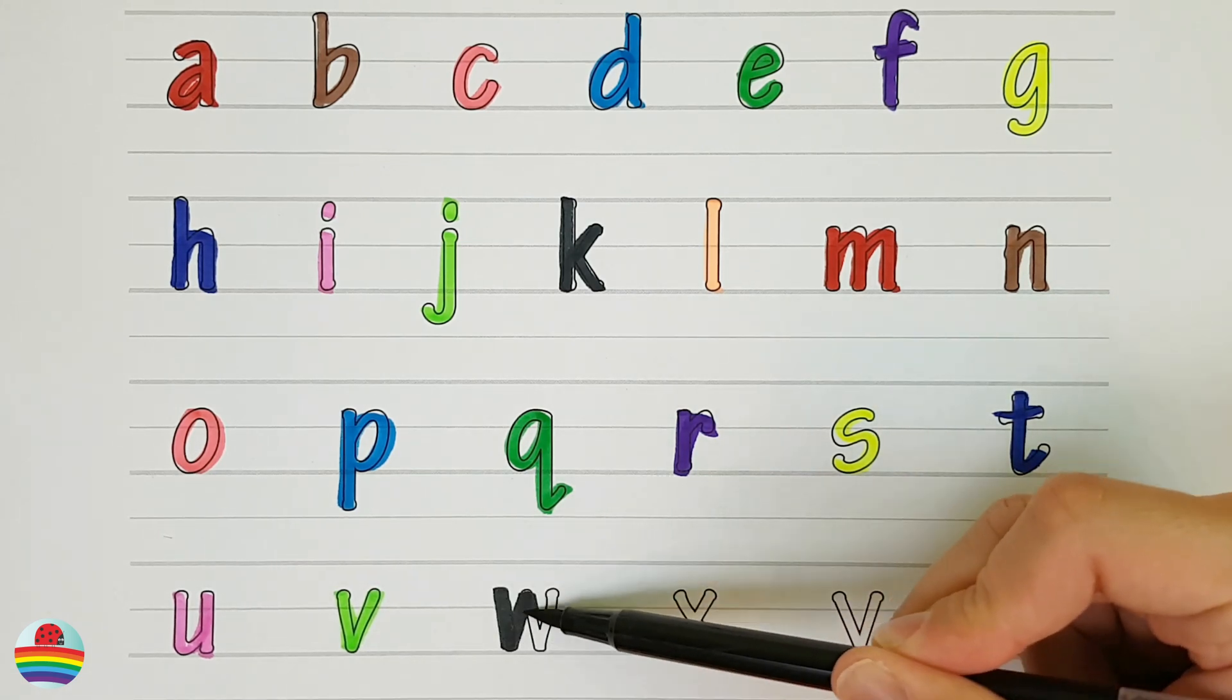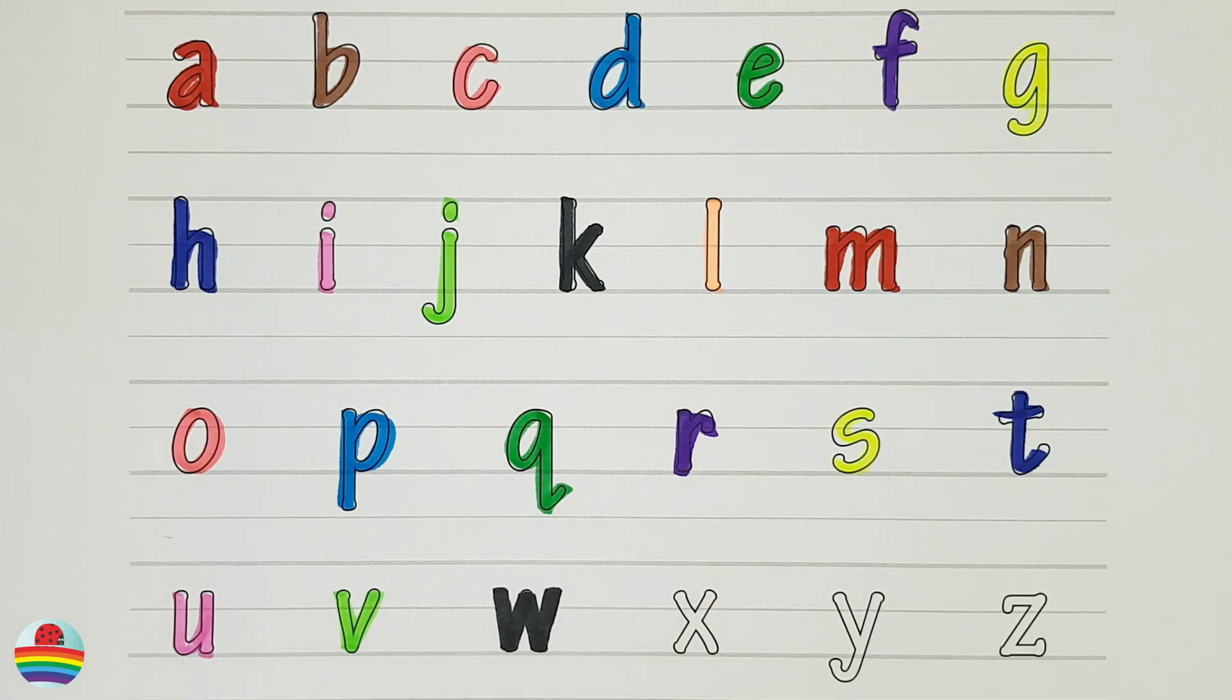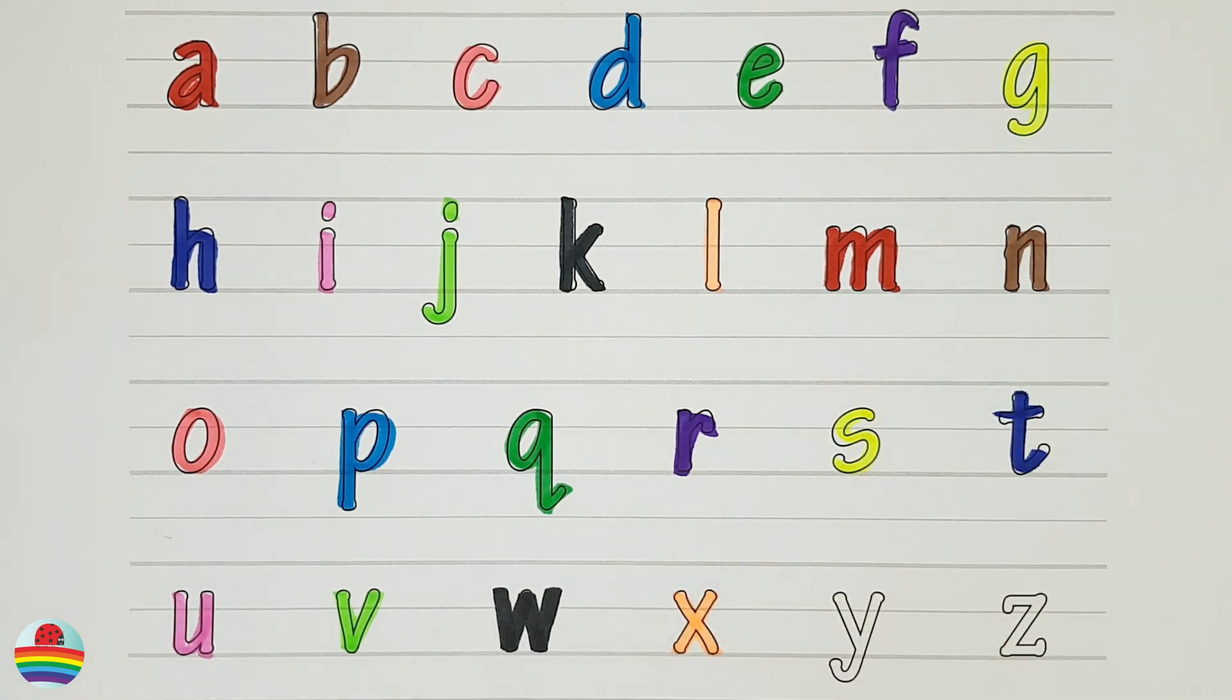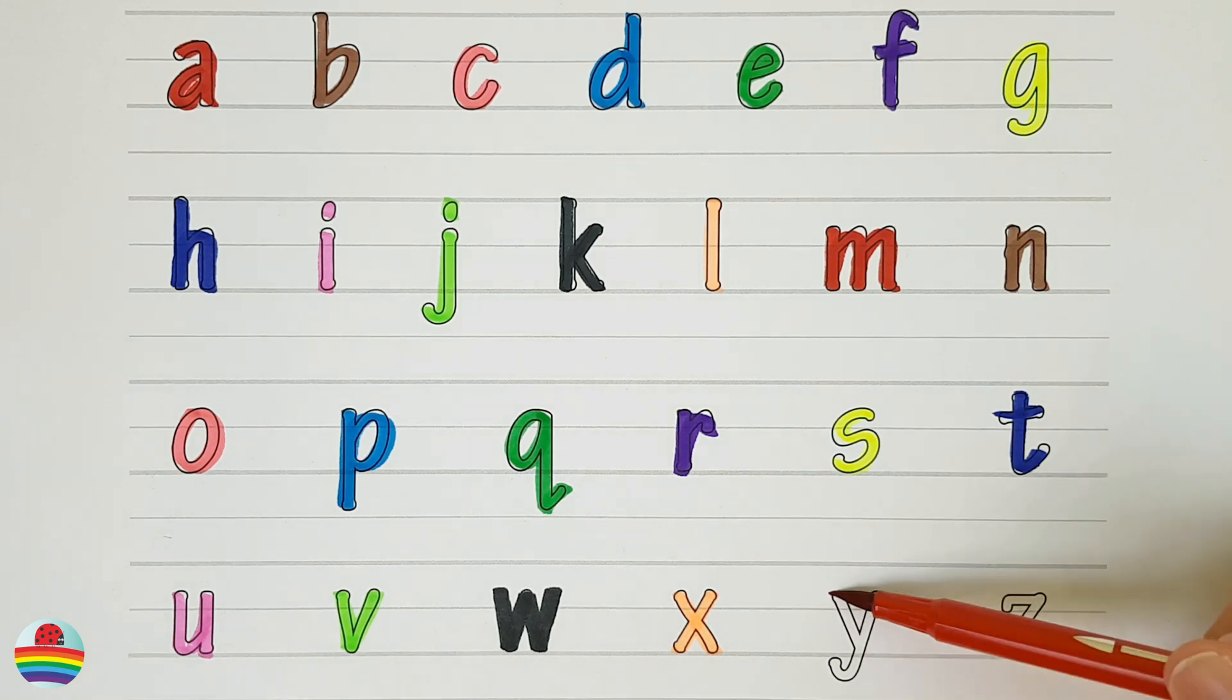W. W is for wolf. X. X is for x-ray fish. Y. Y is for yellow fish.